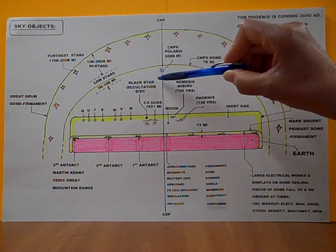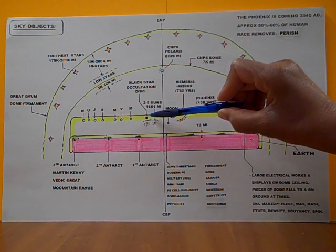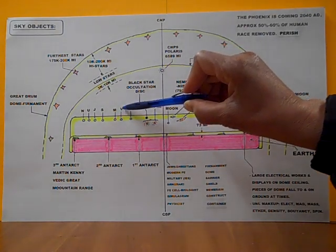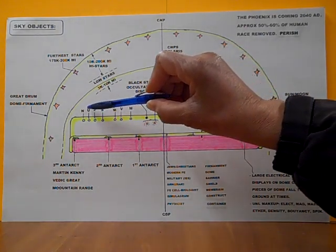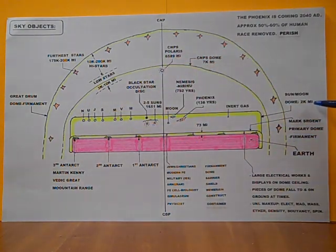Now, this here is the Black Star Occultation Disc, right here. This is Mercury, Venus, Mars, Saturn, Jupiter, Uranus, Neptune. Right here, within the Sun Moon Dome of 2,000 miles above the surface of the earth.